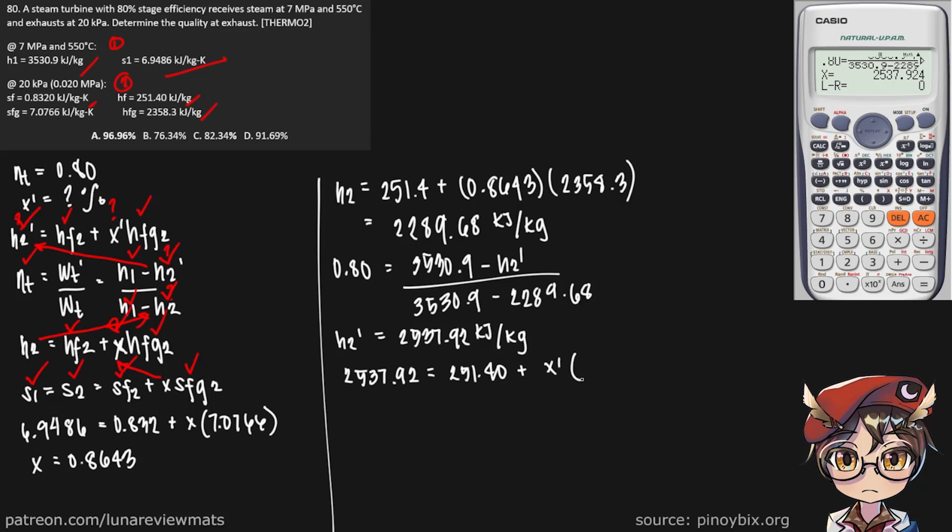HFG2 is 2358.3, let's see what we get. And this is 0.9696, multiplied by 100% we get steam quality of 96.96% at exhaust. And that is our final answer.